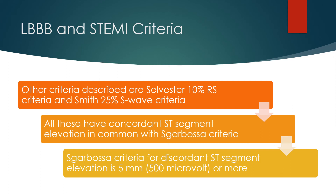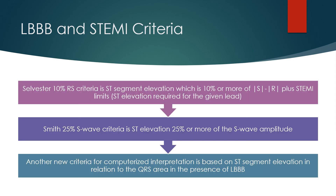The Sgarbossa criteria for discordant ST segment elevation requires 5 mm or more. The Silvestri 10% RS criteria defines ST segment elevation as 10% or more of the absolute S minus absolute R, plus the STEMI limits — i.e., the ST elevation required for the given lead. The Smith 25% STI criteria defines ST elevation as 25% or more of the STI amplitude.